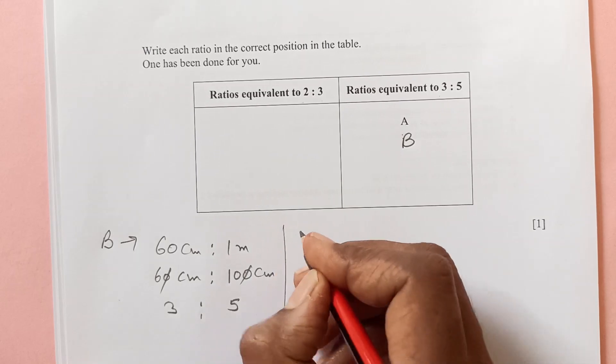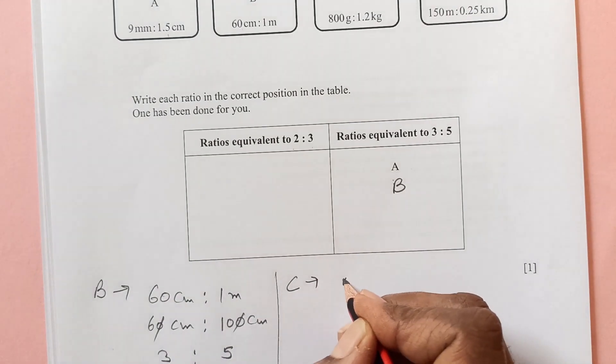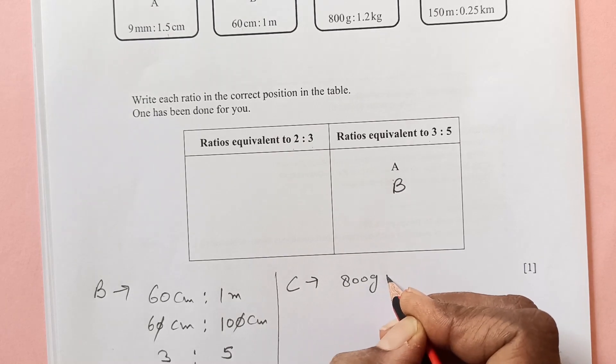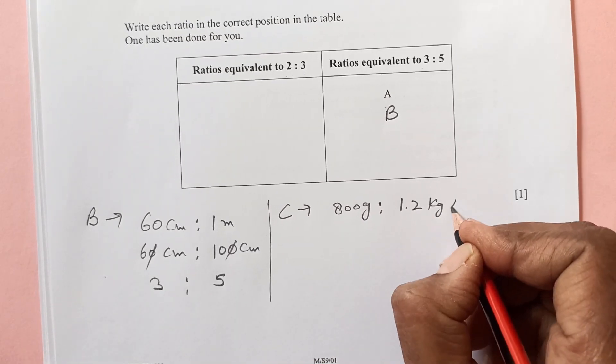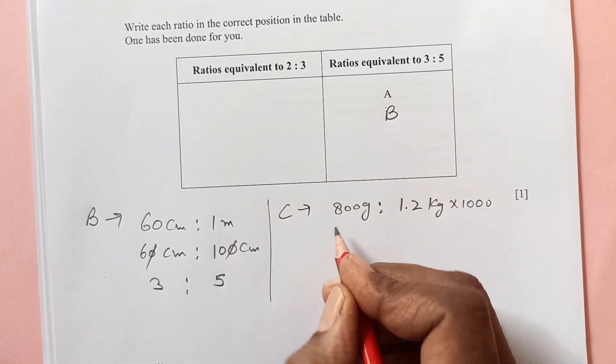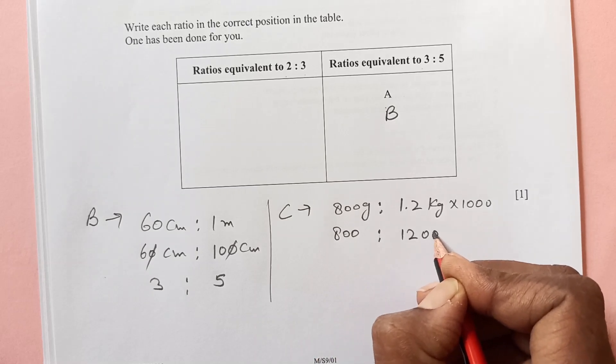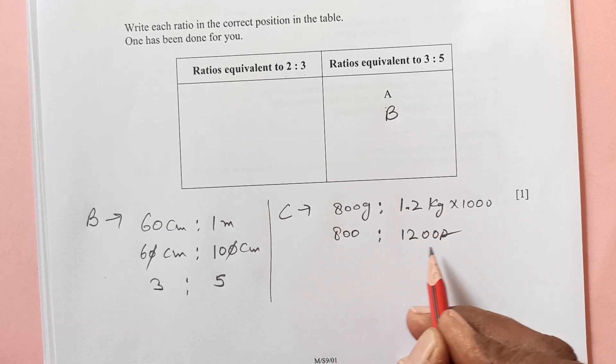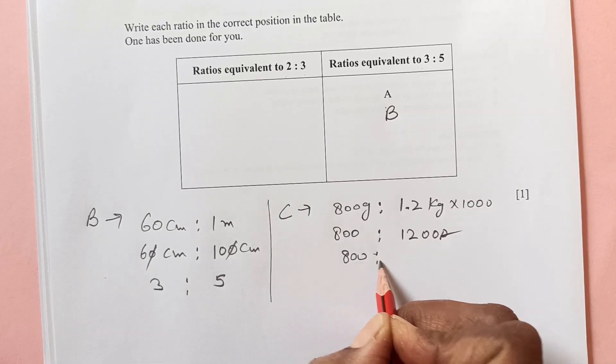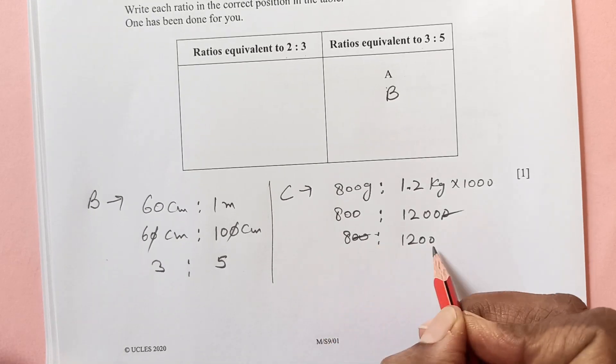Now next is C. For C we have 800 grams ratio 1.2 kilogram. To make 1.2 kilogram to grams we multiply it by 1000. So this is 800 and this will become 1200. Now divide by 100, these two zeros will go.